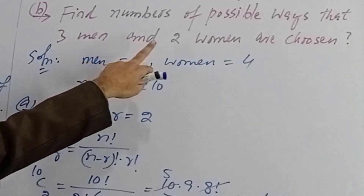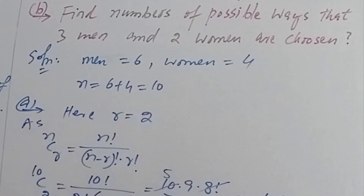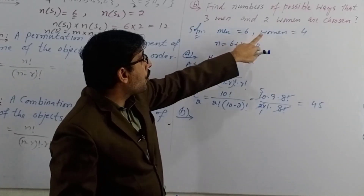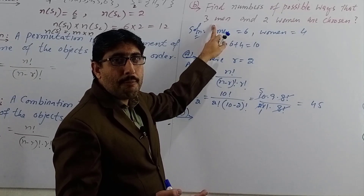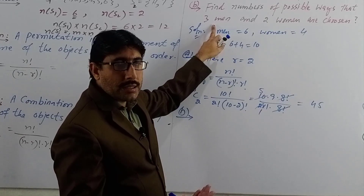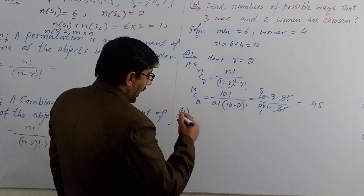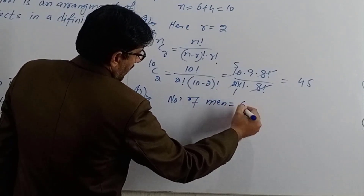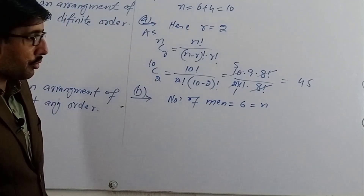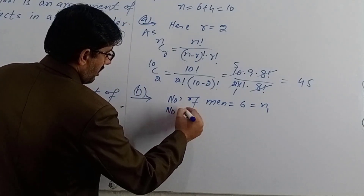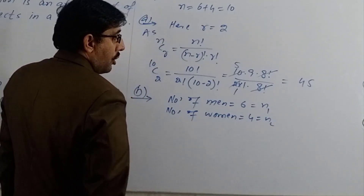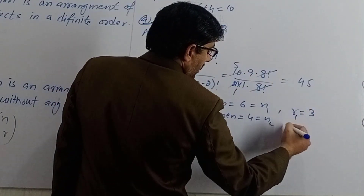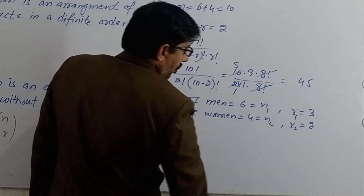Part two: find the number of ways that three men and two women are chosen. Since men must be chosen from 6 men and women from 4 women, we treat these as two separate sub-experiments. For men: n1 equals 6, r1 equals 3. For women: n2 equals 4, r2 equals 2. We compute 6C3 and 4C2 separately.